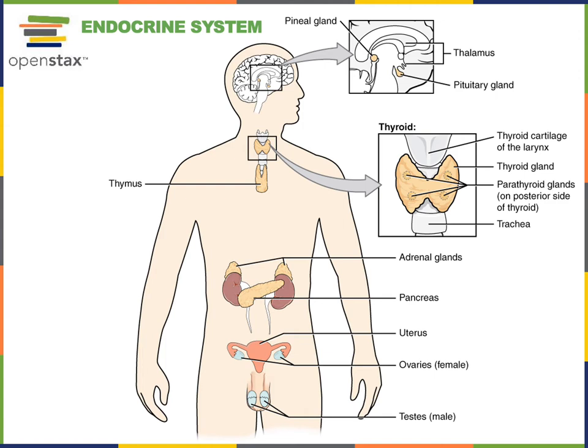The adrenal glands produce stress response hormones and are organized into two distinct regions that produce different hormones. The outer layer is the cortex, while deep within the adrenal gland the adrenal medulla produces epinephrine, also known as adrenaline. Epinephrine is released in response to the sympathetic nervous system and is rapidly released in an alarm phase response to stress.